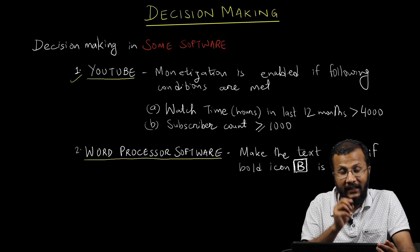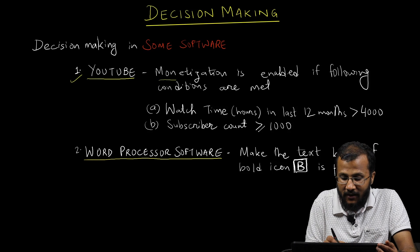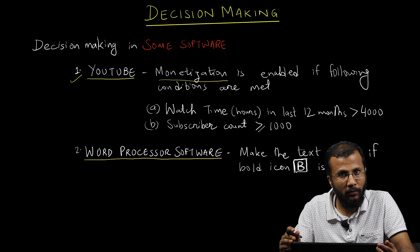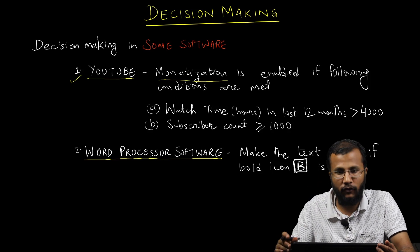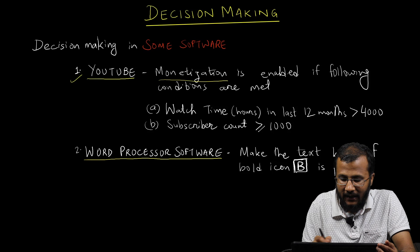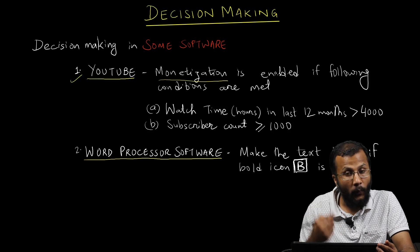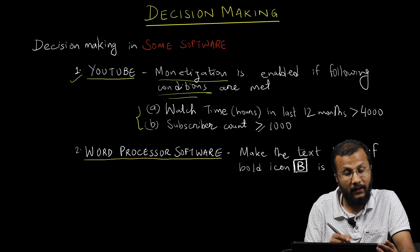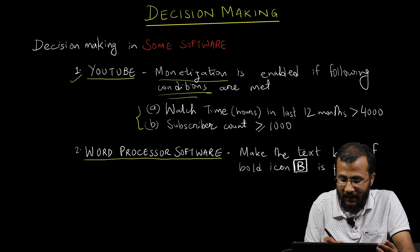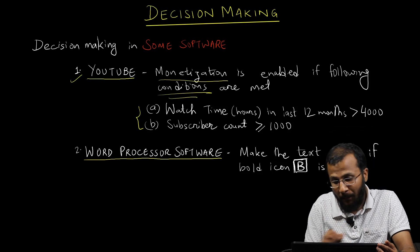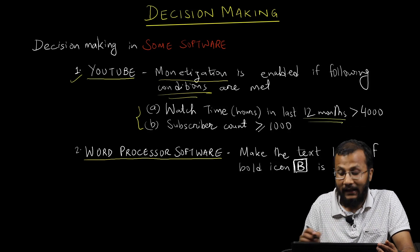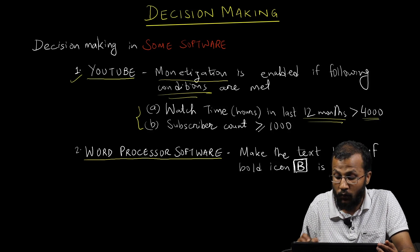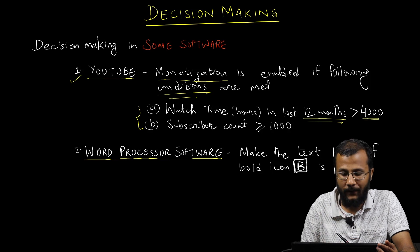First, let's talk about YouTube. In YouTube, monetization is not enabled by default — it is kept disabled. Monetization is only enabled when two conditions are met. Condition A: the total watch time of your videos in the past 12 months should be greater than 4000 hours.